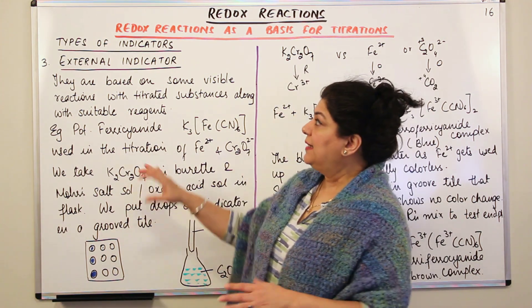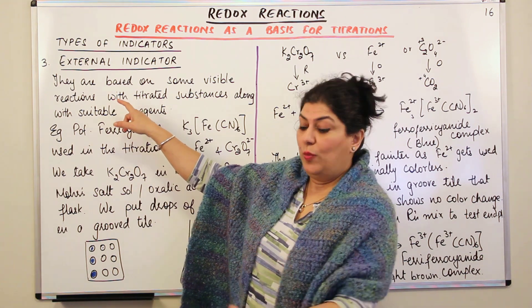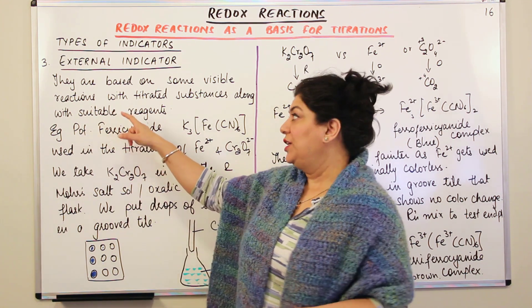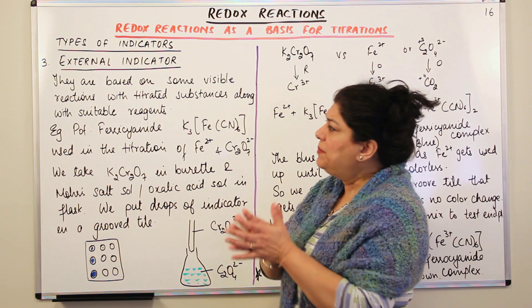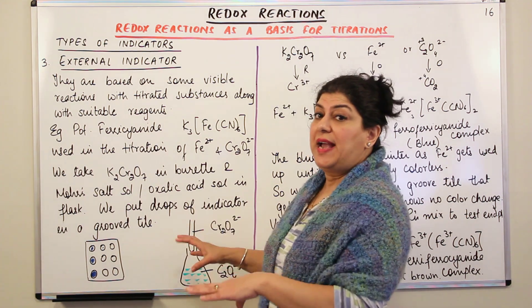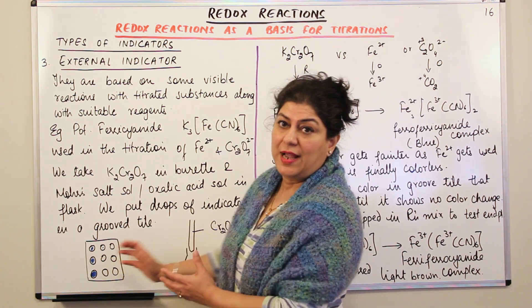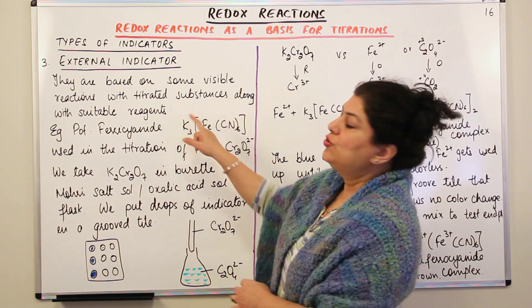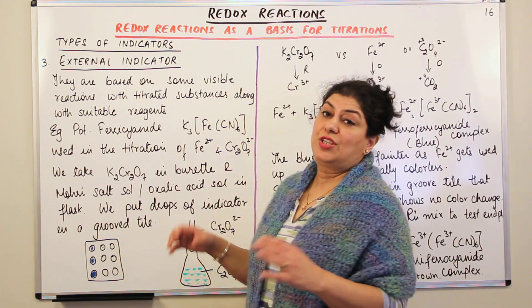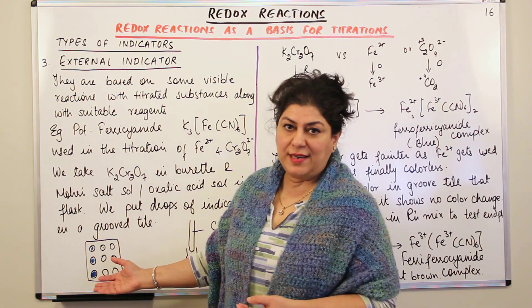So what would an external indicator be? They are based on some visible reactions — that is, a change in color. Since we are talking of indicators, a visible change would be a change in color. So they are based on some visible reactions with titrated substances. Titrated substances means the reaction has already occurred, and this reaction is not going to take place in the reaction mixture — it is going to take place outside, along with suitable reagents. Of course, the indicator you use must react with the reagents chosen for your titration; if they do not react, the substance would not act as an indicator.